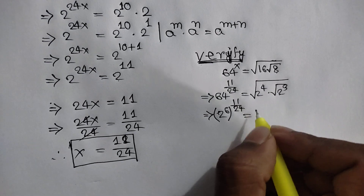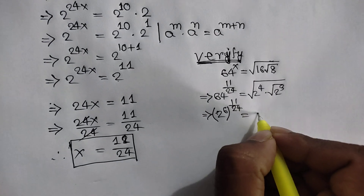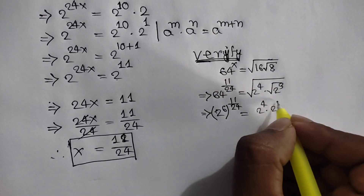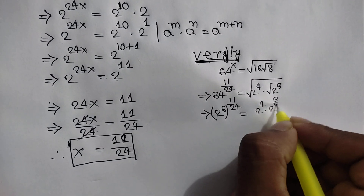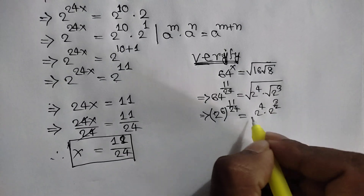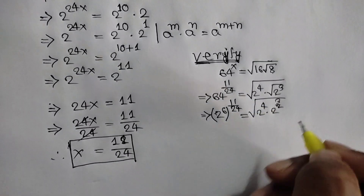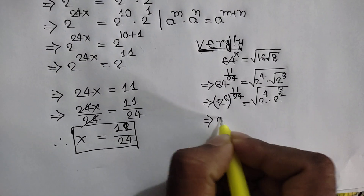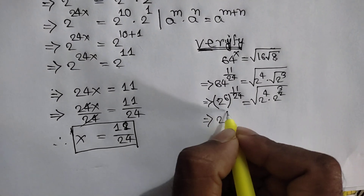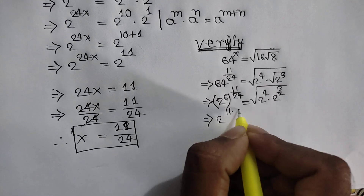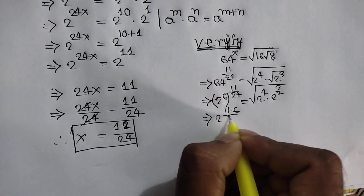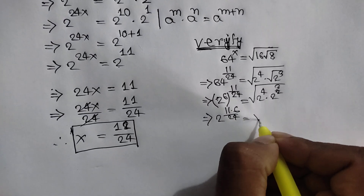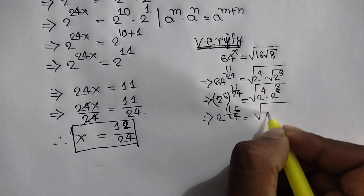Here we can write 2 to the power 4 times 2 to the power 3 over 2. So 2 to the power 11 times 6 over 24 is equal to the square root of 2 to the power 4 plus 3 over 2.